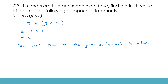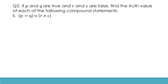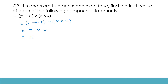Now let's do the next one. This gives: true implies true or false and false. True implies true is a true statement. False and false is false. True or false — with OR, if even one is true the whole statement is true. So this is true overall. Therefore the truth value of the given statement is true.